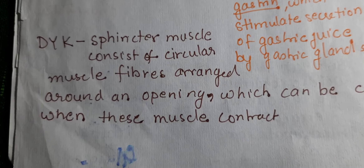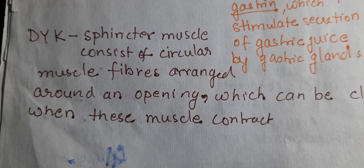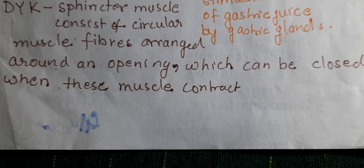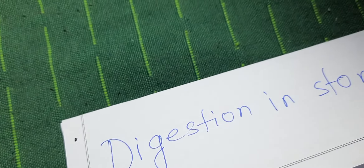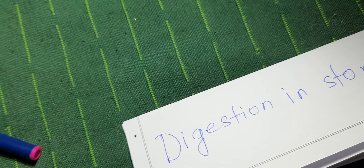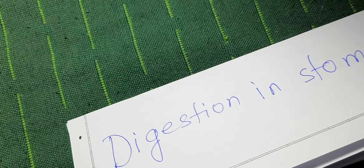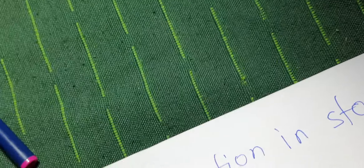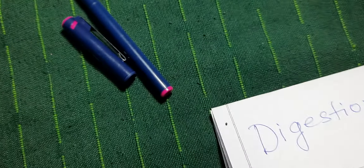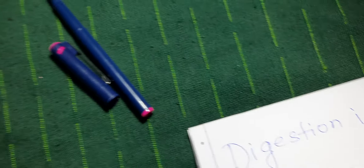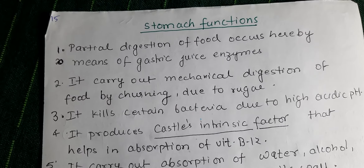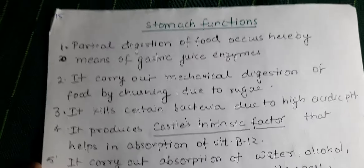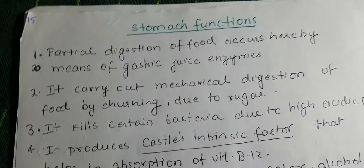Sphincter muscles consist of circular muscle fibers arranged around an opening, which can be closed when the muscle contracts. The contraction and relaxation of these muscles leads to the opening and closing of the sphincter. Now, the main functions of the stomach include partial digestion of food.